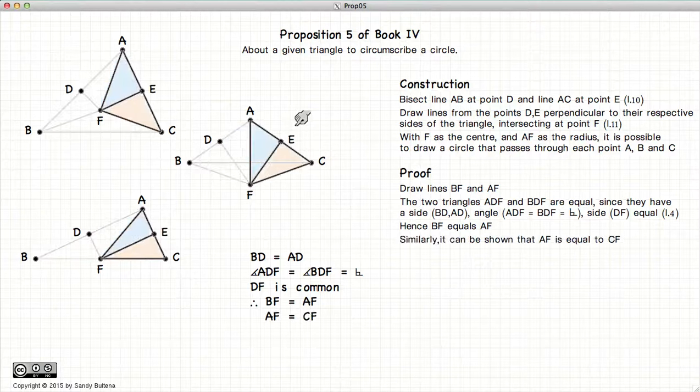Well, we can do the same thing and show that AF is equal to CF. Again, in all cases AF is equal to CF. So we have BF is equal to AF and AF is equal to CF, which means this line is equal to this line, which is equal to that line.